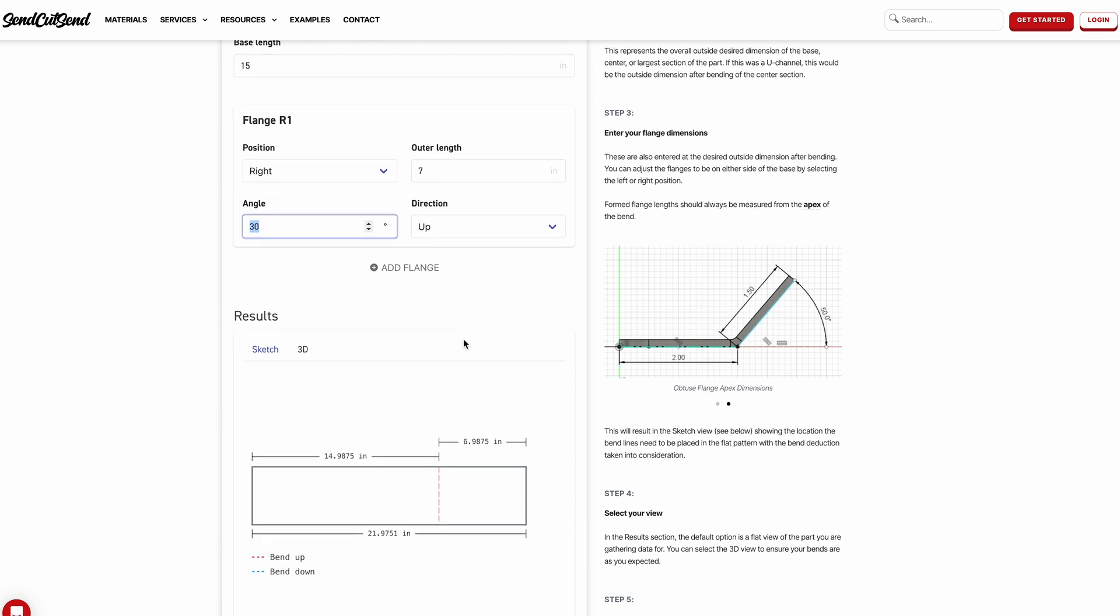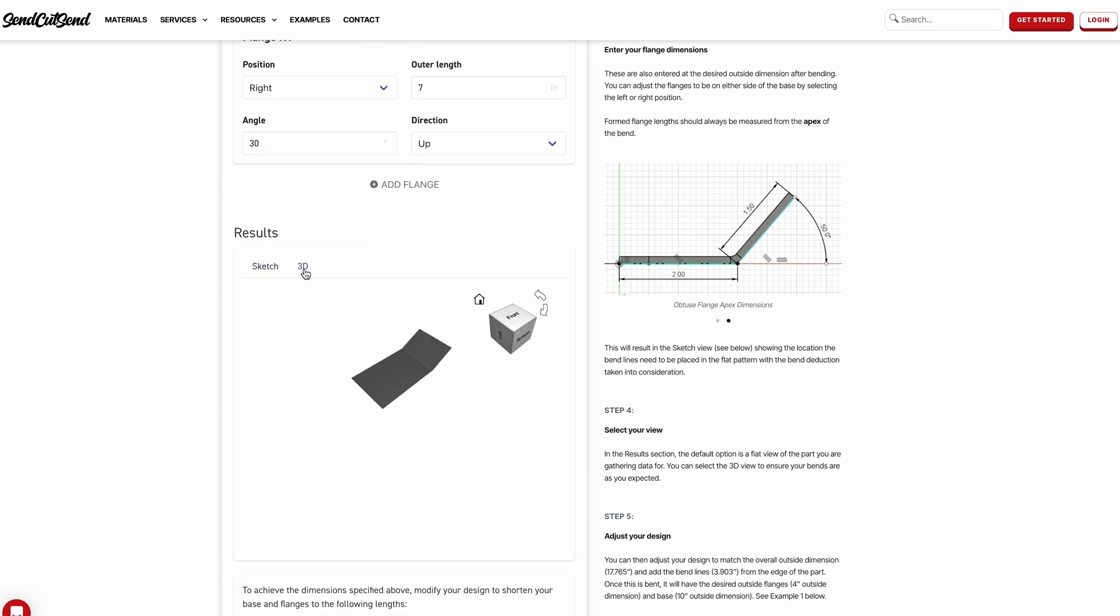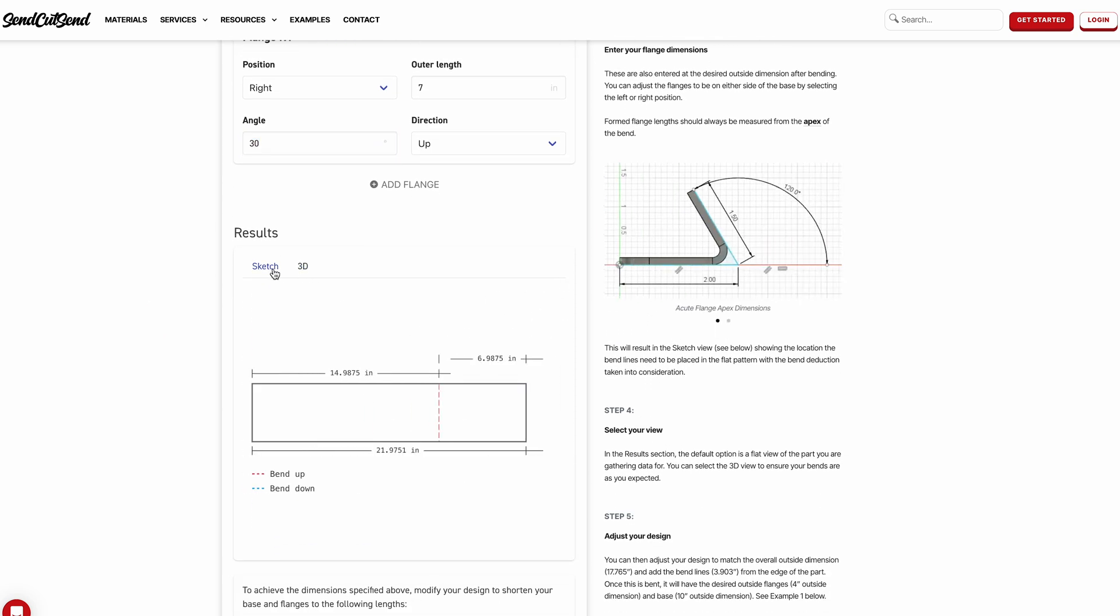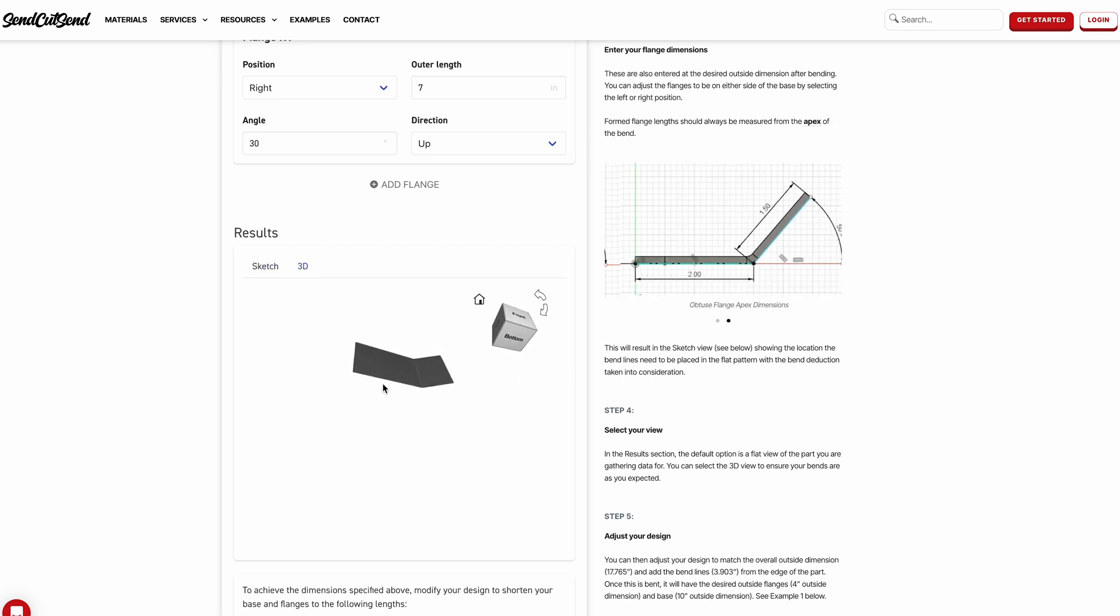Step four you're going to pick your view 2D or 3D. Make sure that you're picking the view that you can best see the part. And step five we're going to be adjusting those to your liking.